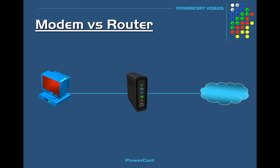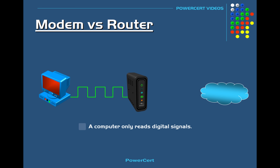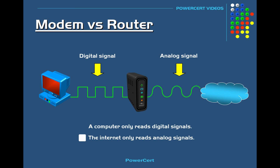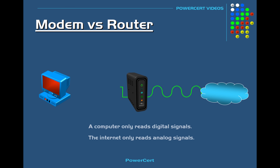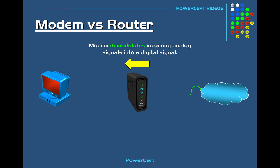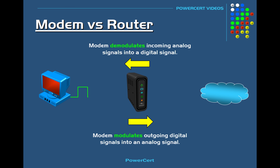The reason why you have to have a modem is because of the two different types of signals used on a computer and on the internet. A computer only reads digital signals, while signals out on the internet are analog. As analog data comes in from the internet, the modem demodulates the incoming analog signals into a digital signal so that a computer can understand it. A modem also modulates outgoing digital signals from a computer into an analog signal as it goes out on the internet.